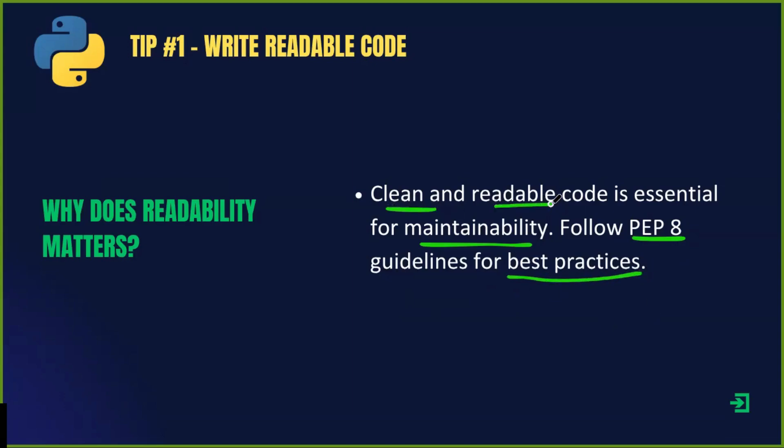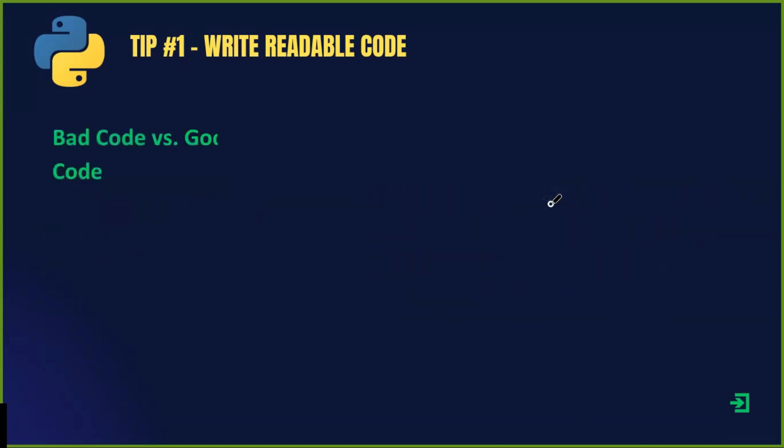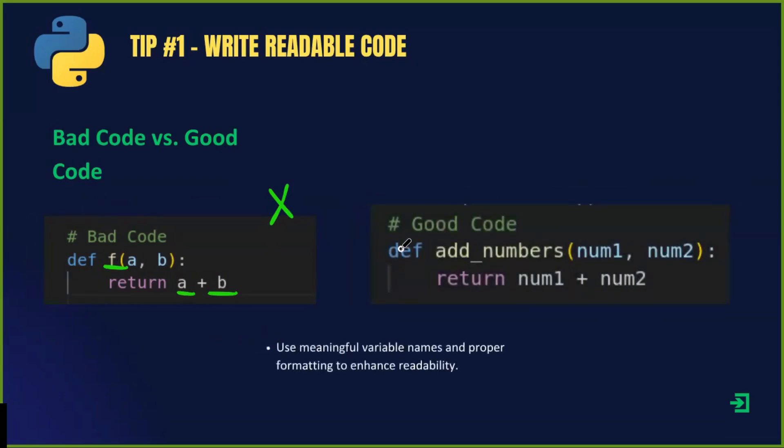Let's look at a simple example. Here is a bad example. This function works, but it's a mess. What does F even mean? What are A and B? We have no clue. Instead, let's rewrite this using meaningful variable names. Now, anyone reading the code will understand what's happening instantly.